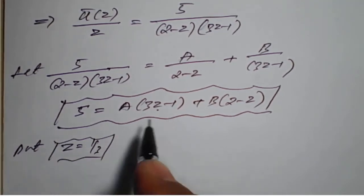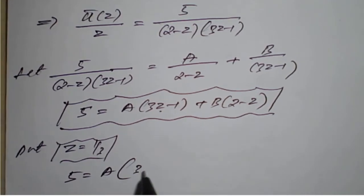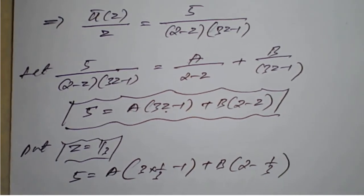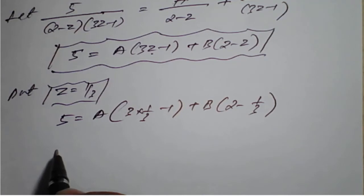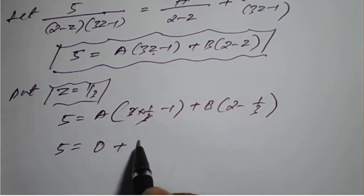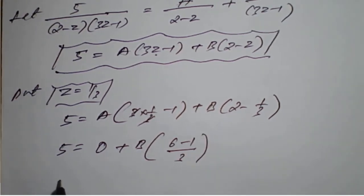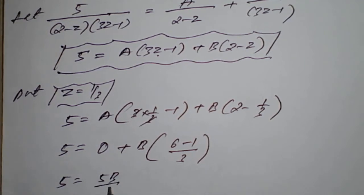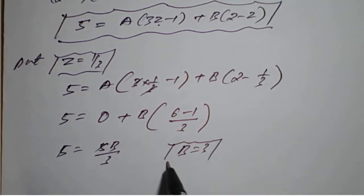Putting z = 1/3: 5 = A(3 × 1/3 minus 1) plus B(2 minus 1/3). The 3 and 3 cancel giving 1 minus 1 = 0, so 0 × A = 0. For B: taking LCM of 3, we get 2 minus 1/3 = 5/3. So 5 = B × 5/3, and the 5s cancel giving B = 3.